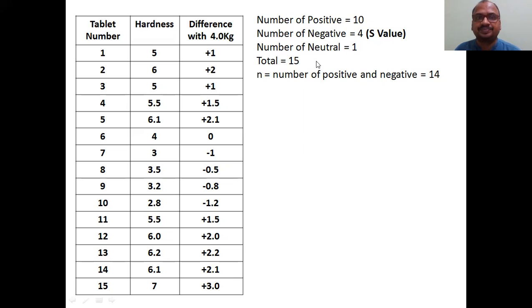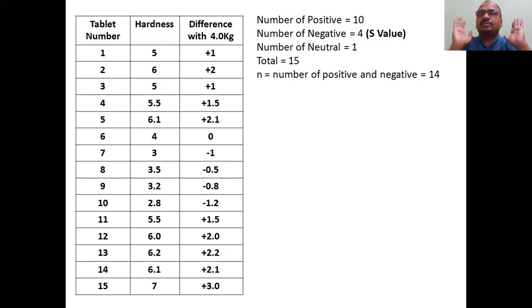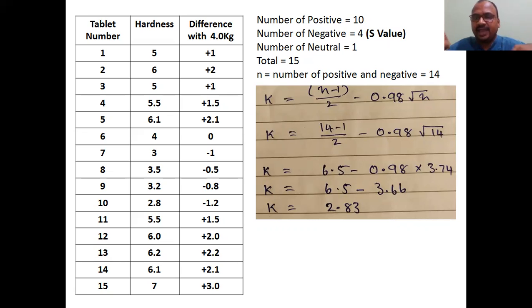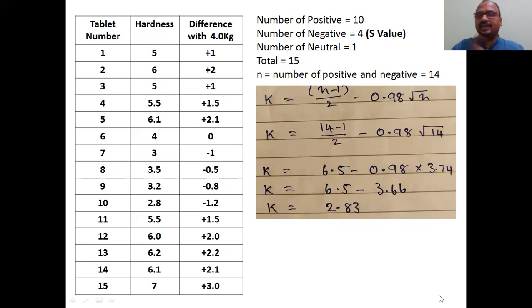Total N = number of positives plus negatives only, not neutrals: N = 10 + 4 = 14. Now calculate K using the equation: K = (n−1)/2 − 0.98 × √n = (14−1)/2 − 0.98 × √14. Solving this gives K = 2.83.